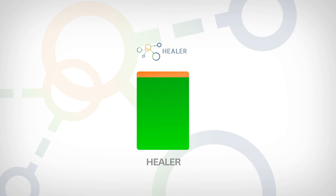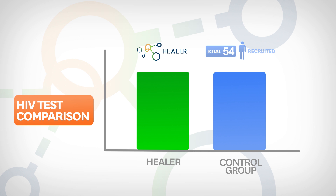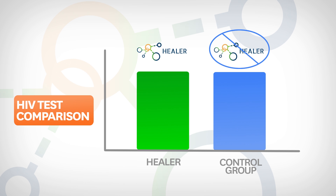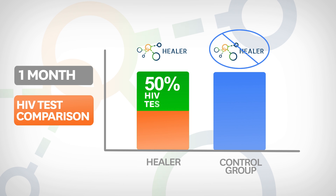We compared this to a control group made of 54 youth, where peer leaders were selected without using Healer. After just one month, almost 50% of the youth in the Healer subset who had previously gone untested had taken an HIV test, in contrast to only 33% in the control group, demonstrating that Healer brings marked improvement over current approaches to network-based HIV interventions.